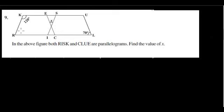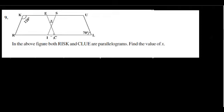In this problem, we have been given a figure in which RISK and CLUE are two parallelograms, and we have to find out the value of X. Let us assume the point of intersection of SI and EC is O. To get the value of X, we consider triangle OES, and in this triangle we know that the sum of the three angles is equal to 180 degrees.